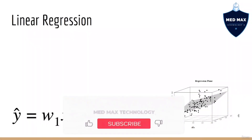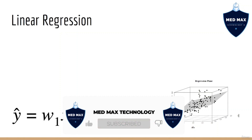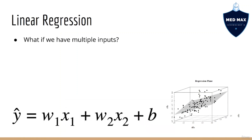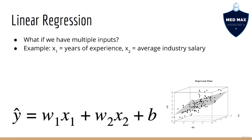Of course, in the real world, we might want to make a prediction about your salary based on multiple factors. Instead of just years of experience, we might have another input — let's say average industry salary. So now your salary can also depend on what industry you are working in. We'll call years of experience x1 and we'll call average industry salary x2. In this scenario, we would write out our model as y equals w1*x1 plus w2*x2 plus b. w1 and w2 are called the weights of the model, and they are essentially the slope for each of the individual inputs x1 and x2.